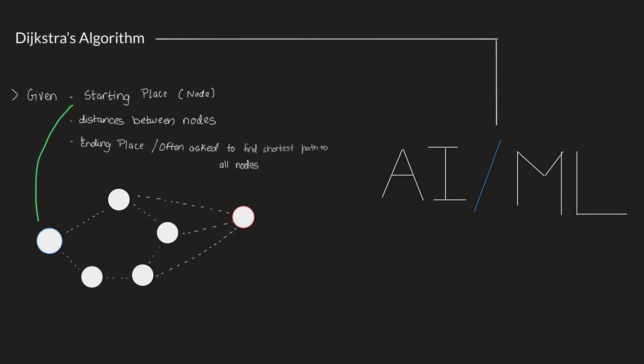With Dijkstra's algorithm, we are given the starting place or the starting node, which is A in this case, the distance between the nodes, and the ending place. Or sometimes we are not given the ending place and are asked to find the shortest path from a particular node to all the other nodes. So, we are given A, B, C, D, E, and F. These are called vertices, and the distance between the nodes are called edges. Each edge might have a different distance from each other.